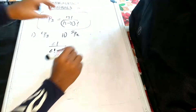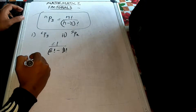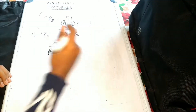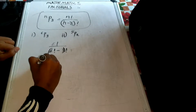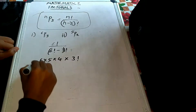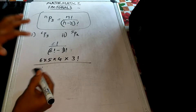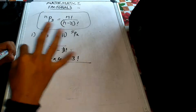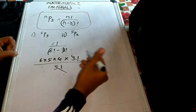So for 6P3, we have 6 factorial divided by 6 minus 3 factorial, which is 3 factorial in the denominator. So 6 into 5 into 4 into 3 factorial, divided by 3 factorial. The 3 factorials cancel, leaving 6 into 5 into 4, which equals 120.